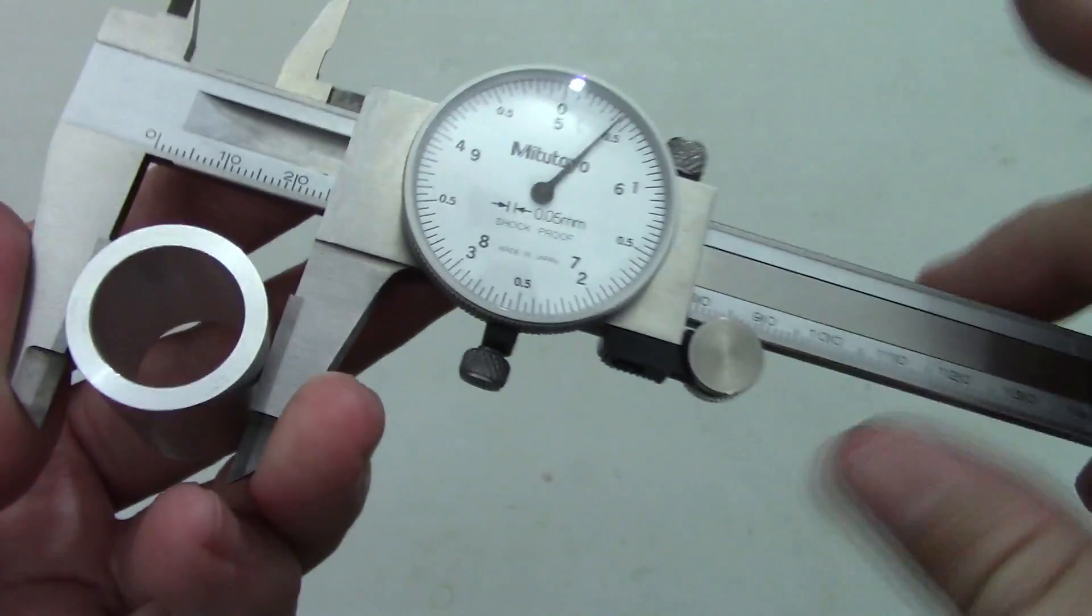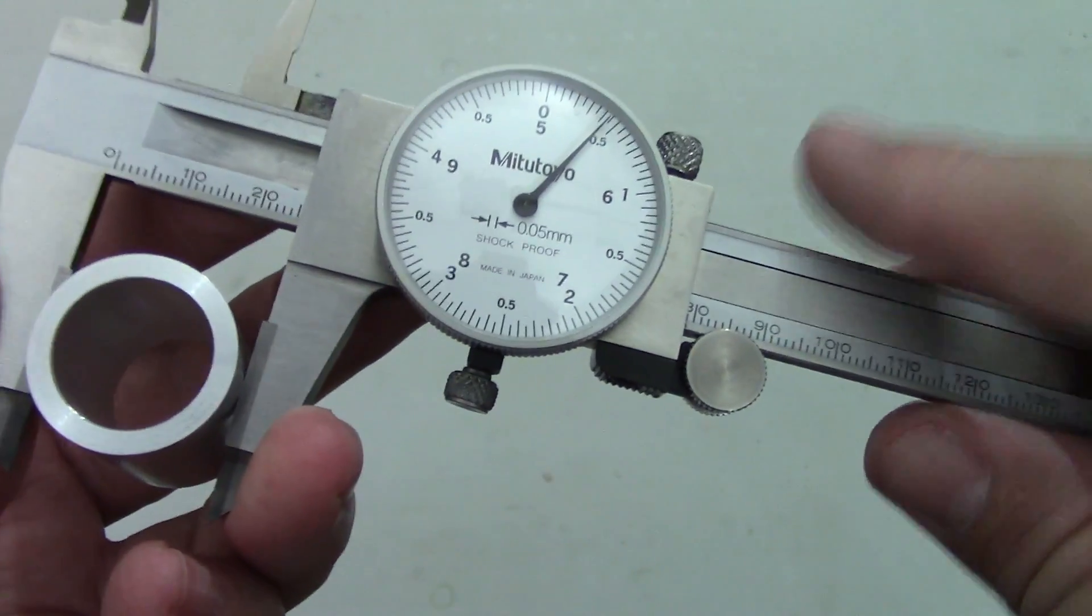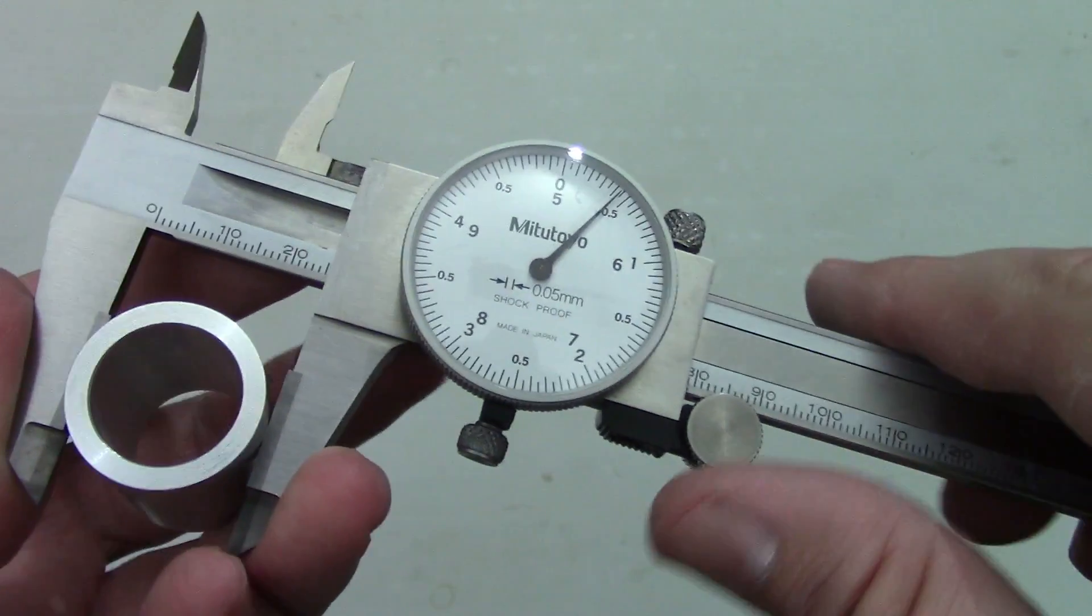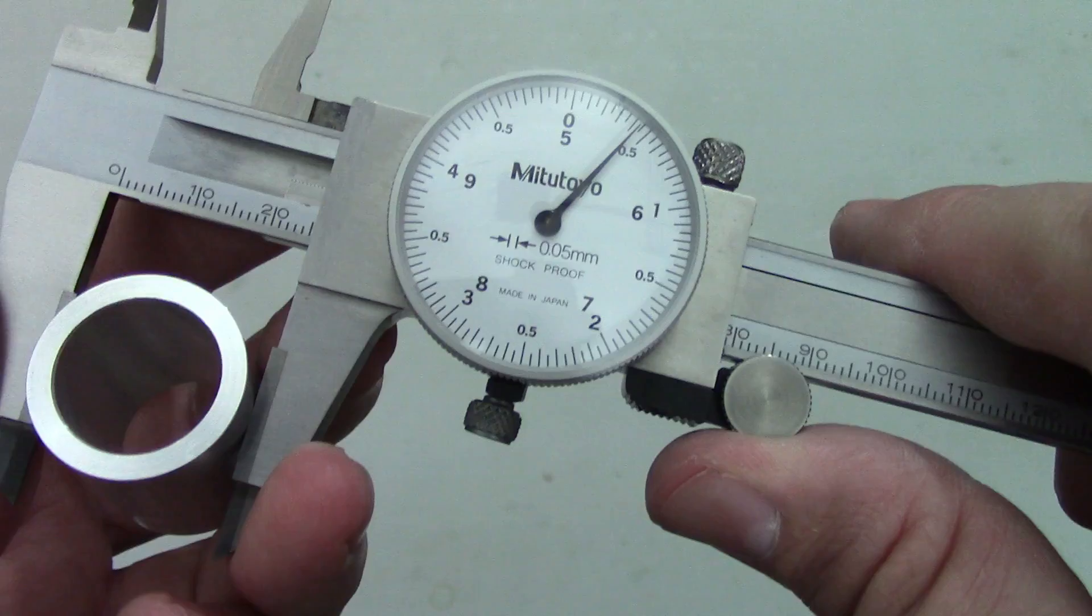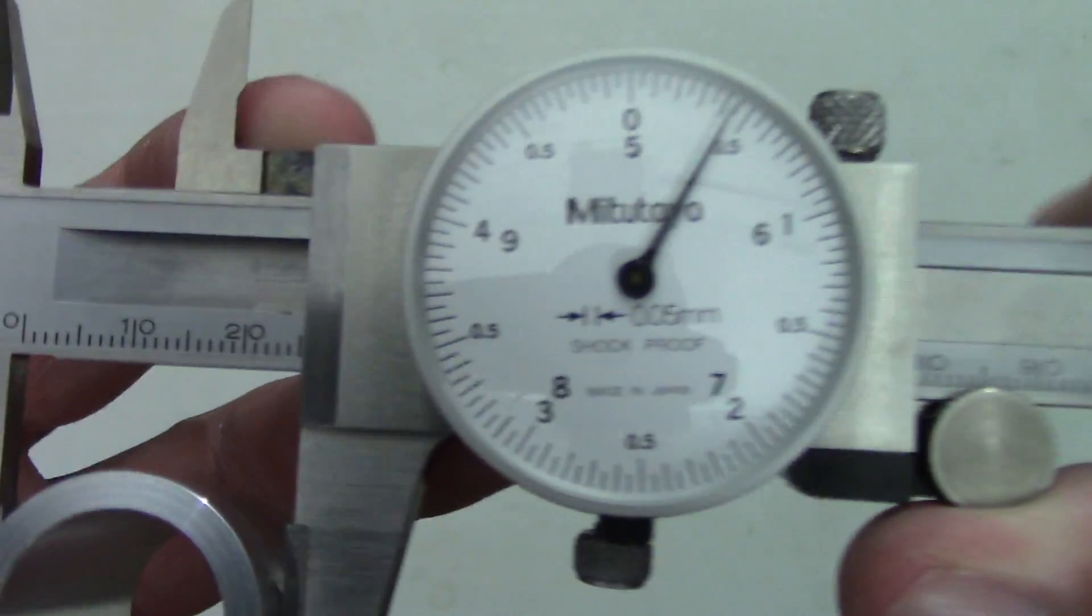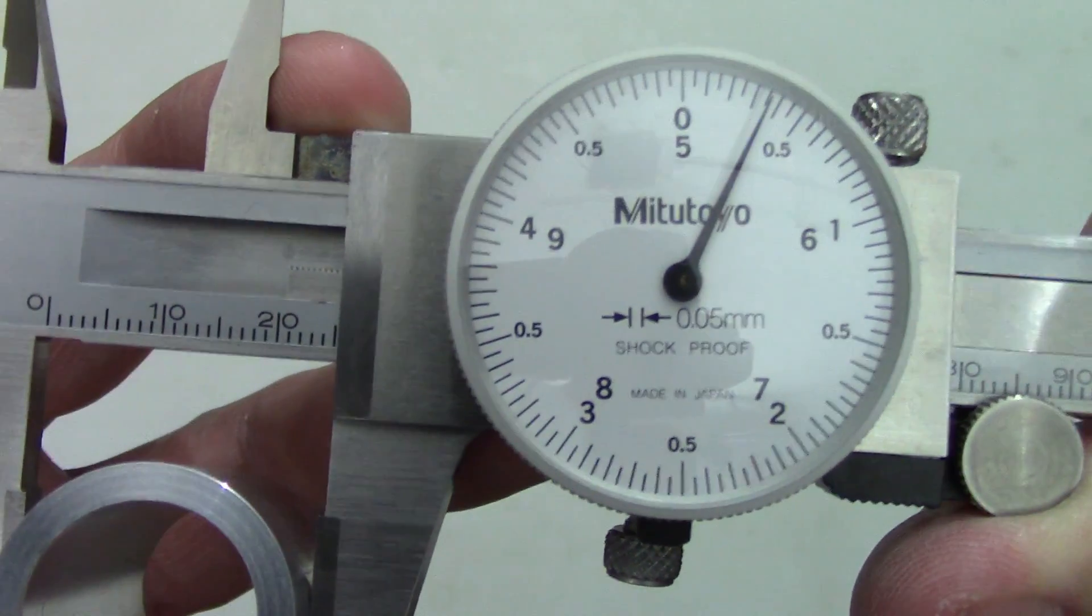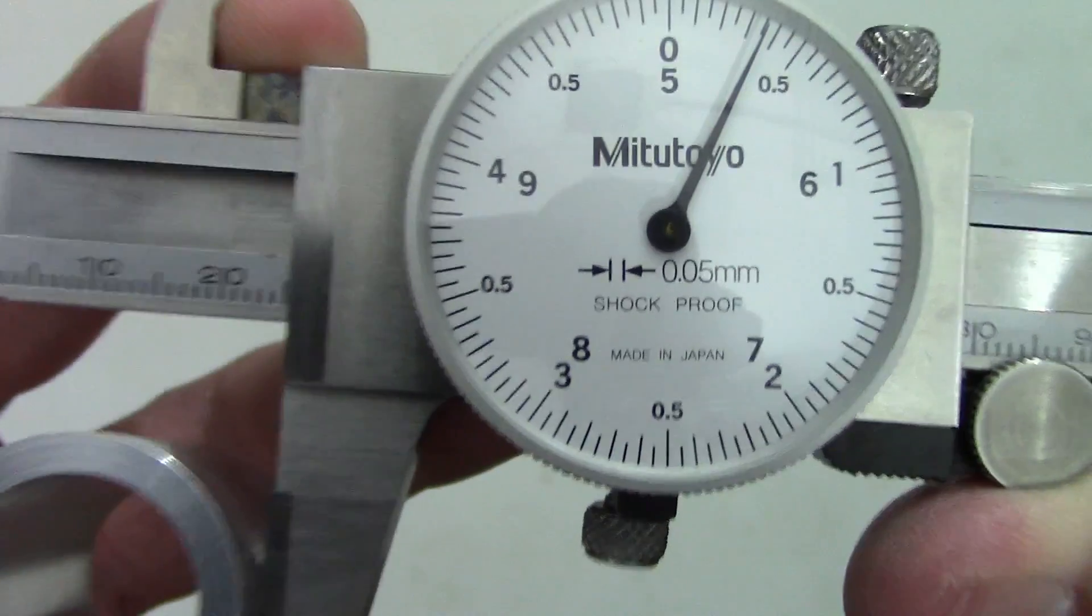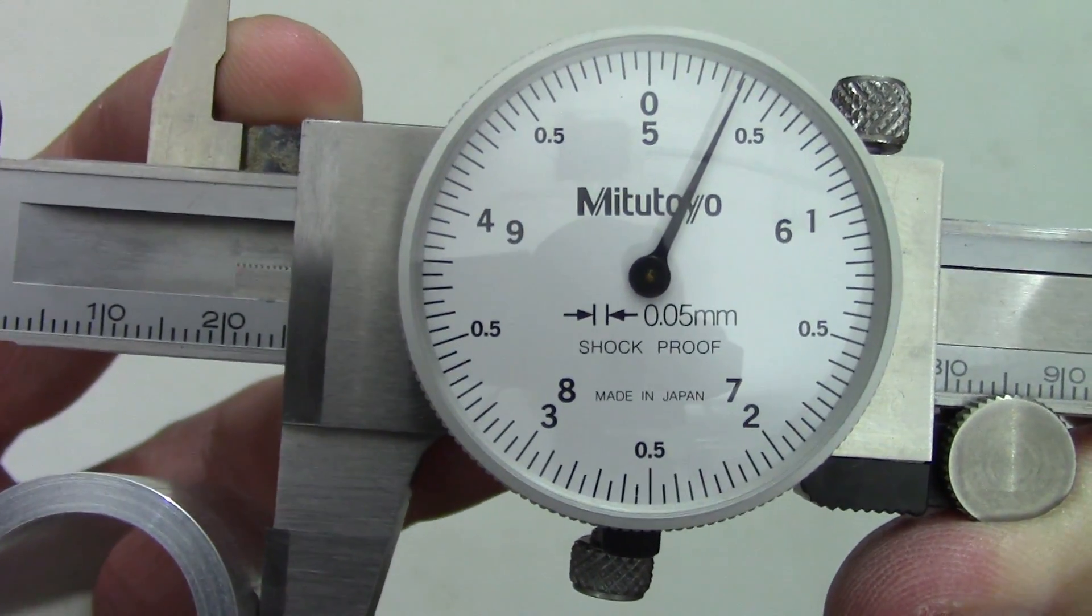For quick and dirty work, that's probably fine, especially if you have a highly developed sense of feel, but you have a whole lot of leverage on the jaws when you use the wheel. Seriously, you can squeeze the heck out of it and make your measurement quite a bit smaller than the actual measurement of the part.